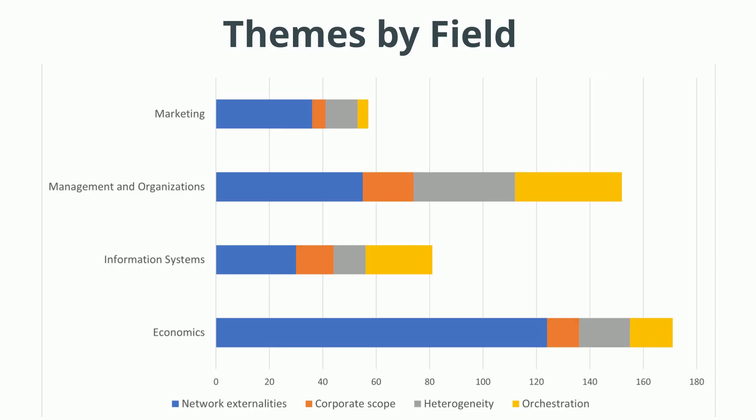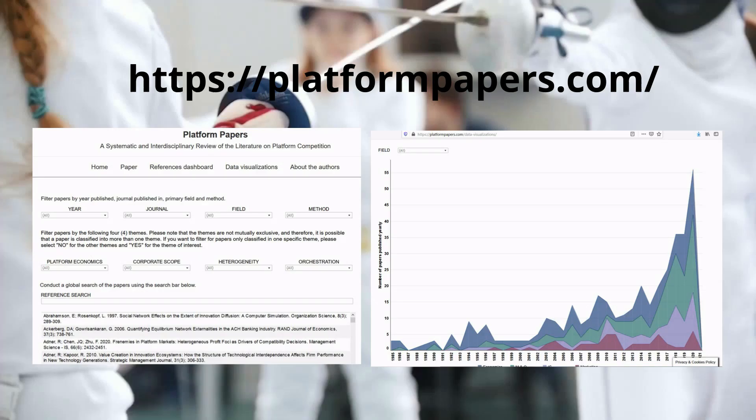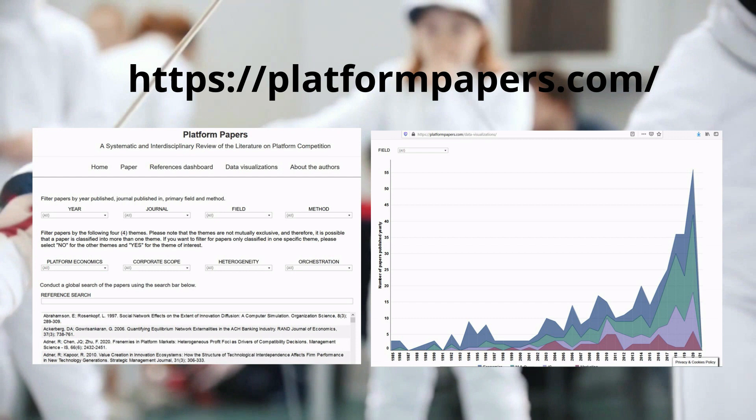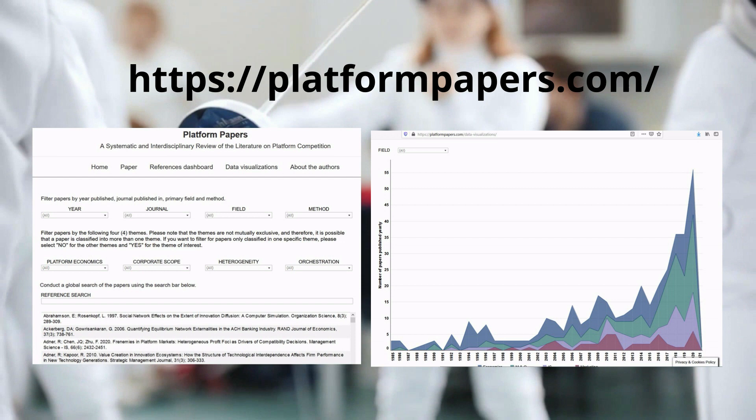All of the themes were represented in each of the four fields, though some fields emphasize some themes more than others. There's also a website that accompanies the paper where you can search up papers by field, method, theme, and more. There's also a place where you can look at visualizations of the data. For more details, check out the link below, and thanks for watching.